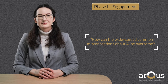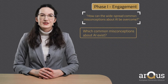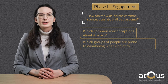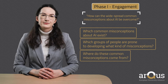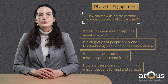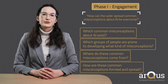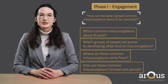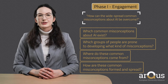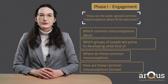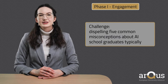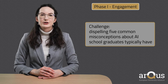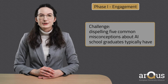To illustrate this, let's consider the following questions: Which common misconceptions about AI exist? Which groups of people are prone to developing what kind of misconceptions? Where do these common misconceptions come from? How are these common misconceptions formed and spread? These questions show the multifaceted character of this challenge. Asking questions and answering them is a good way to narrow a challenge down to a workable level. After undergoing a process of questioning and first attempts at answering, a team might decide to work on the challenge of dispelling five common misconceptions about AI that school graduates typically have.